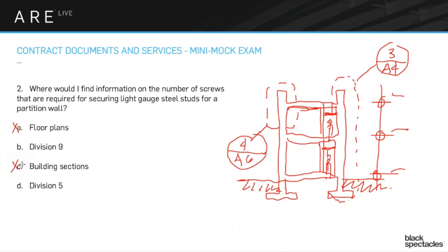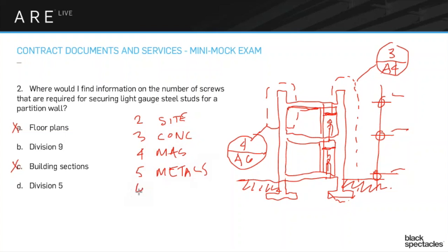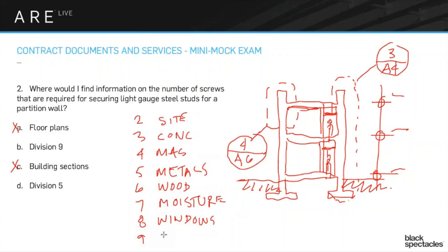It really comes down to Division 9 or Division 5. To understand how the divisions work: Division 2 is site and existing conditions, Division 3 is concrete, Division 4 is masonry, Division 5 is metals, Division 6 is wood, Division 7 is moisture protection — roofs, flashings, and similar — and Division 8 is windows and doors. Division 9 is finishes.